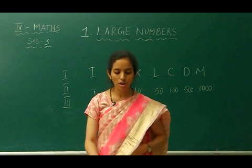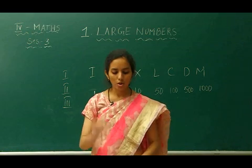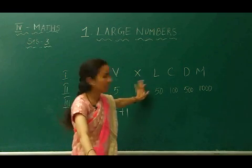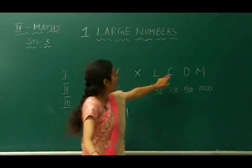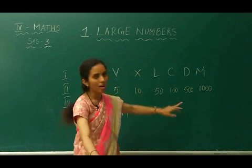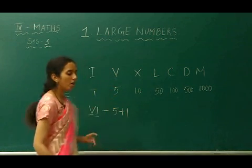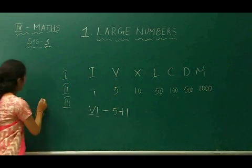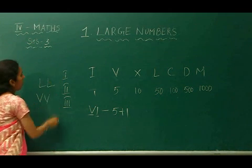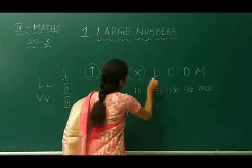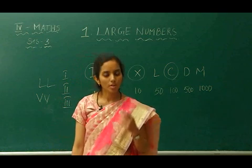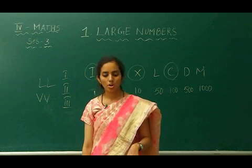There is one more rule. Only I (1), X (10), and C (100) can be repeated. Only these three numbers can be repeated; other numbers cannot be repeated. For example, V and D cannot be written repeatedly. Only I, X, and C can be repeated if you want to write any number in Roman numerals.